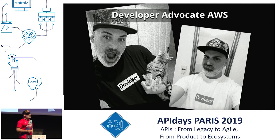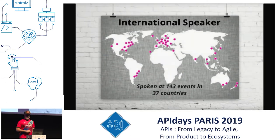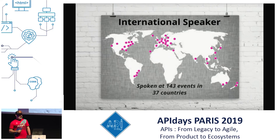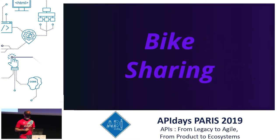I'm a developer advocate at AWS. You can see I have a lot of time to myself doing selfies with my cat — I'm a cat person. I've been doing full-time talks for the last four years, so I've been pretty busy, as you can see from this map. There are still some areas I haven't visited yet, so I can keep on going.